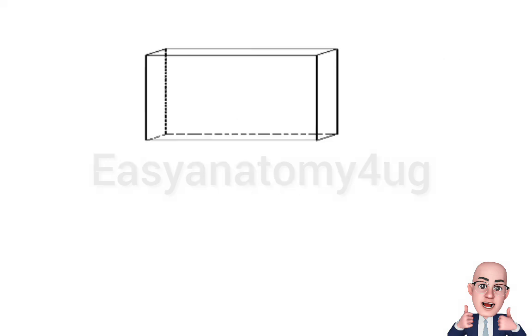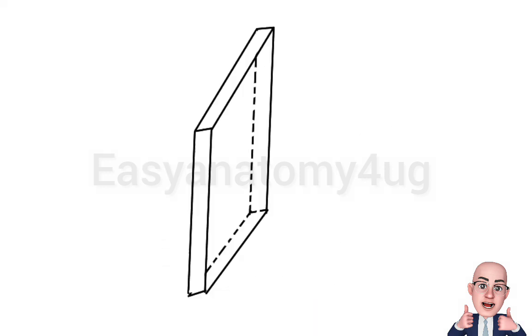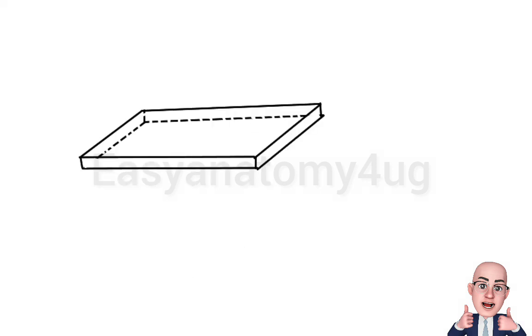Now let us revise once again. Coronal plane divides the body into anterior and posterior. Sagittal plane divides the body into right and left, and transverse plane divides the body into superior and inferior.